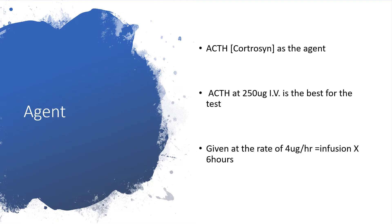The agent used here is adrenocorticotropic hormone, or cortrosyn. Adrenocorticotropic hormone at 250 micrograms should be given intravenously and should be given at a rate of 4 micrograms per hour infusion for 6 hours.